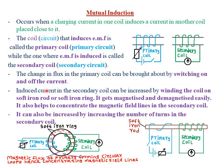You can also increase the induced EMF or induced current by increasing the number of turns in the secondary coil. For example, this primary coil has about two turns, but the secondary coil has about four turns. If you want to increase the EMF in the secondary coil, you simply increase the number of turns in the secondary coil as compared to the primary coil. Similarly here, we also have about two turns in the primary coil but about four turns in the secondary coil. The more the number of turns in the secondary coil, the more the induced EMF or the induced current.